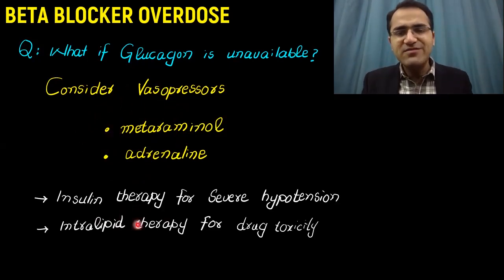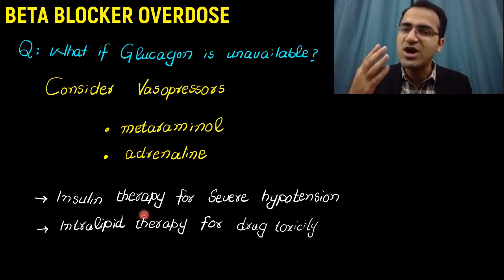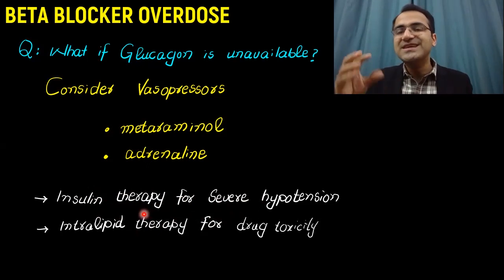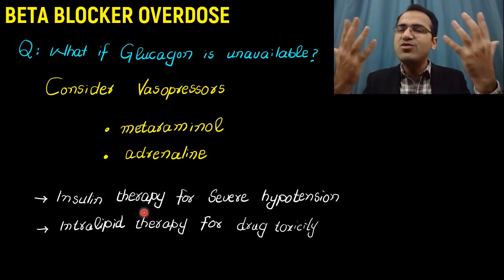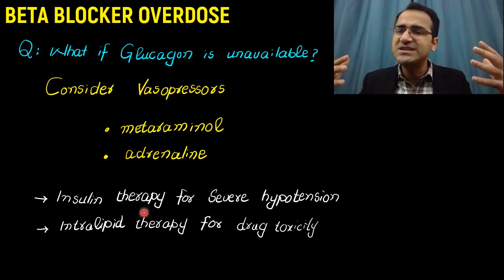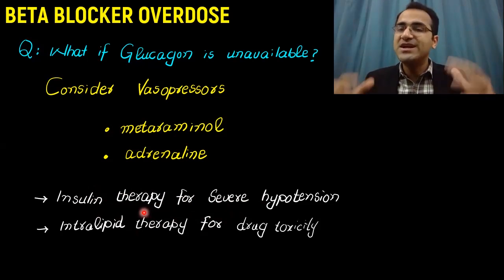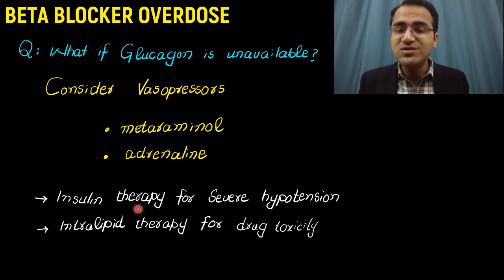You can give insulin therapy for severe hypotension. The concept behind insulin therapy is that if the person has an overdose of a cardiotoxic thing and you give insulin in that case, the insulin increases the metabolism of heart cells, increases the glucose uptake, and improves the heart function. Insulin therapy can be used if there is severe hypotension due to beta blocker overdose.